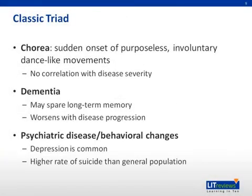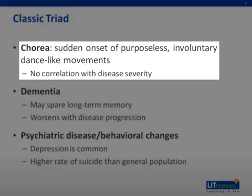More information on the classic triad: chorea, meaning 'to dance' in Greek, is defined as a sudden onset of purposeless, involuntary, dance-like movements. Chorea can initially progress in the disease, but then with later onset of dystonia and rigidity, can become less prominent. Clinically, chorea is commonly integrated into the patient's baseline mannerisms to minimize this abnormality.